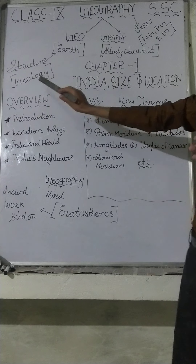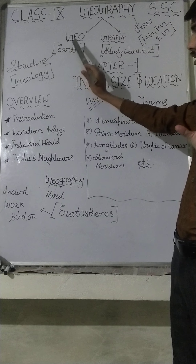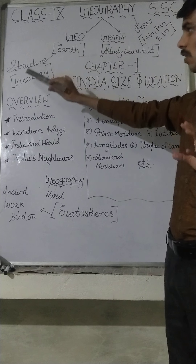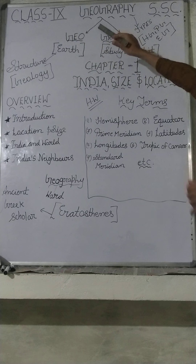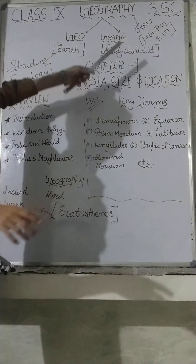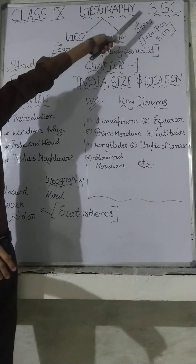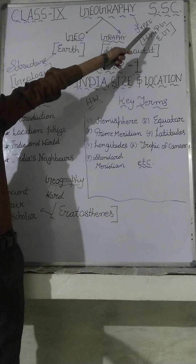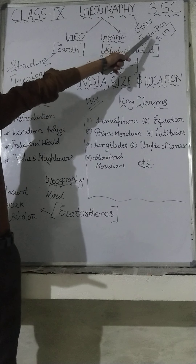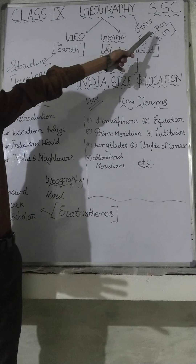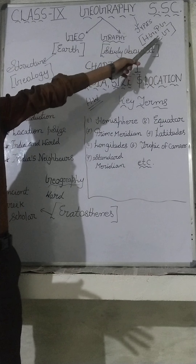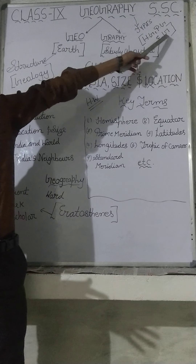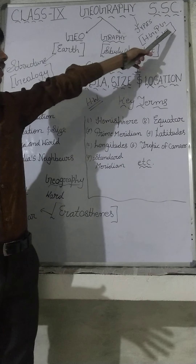Geology is also a science — when we study the structure of earth, it is known as geology. Now, when we go through the types of geography, we will see three basic types: human geography (HG), physical geography (PG), and environmental geography (EG). I have written here the short forms.